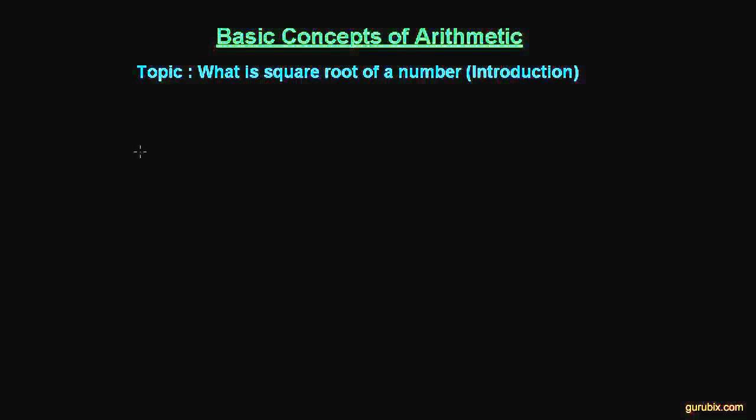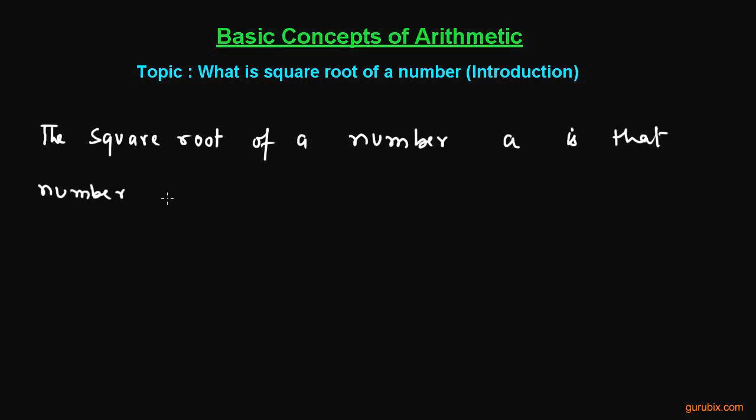We can define the square root of a number like this. Suppose the square root of a number A is that number which when is multiplied by itself gives A as the product.